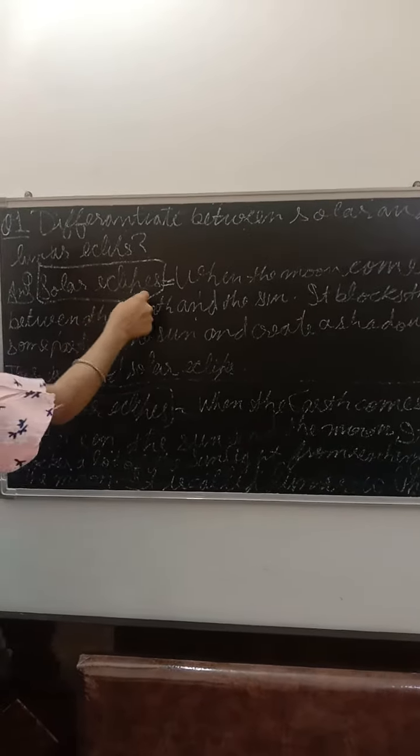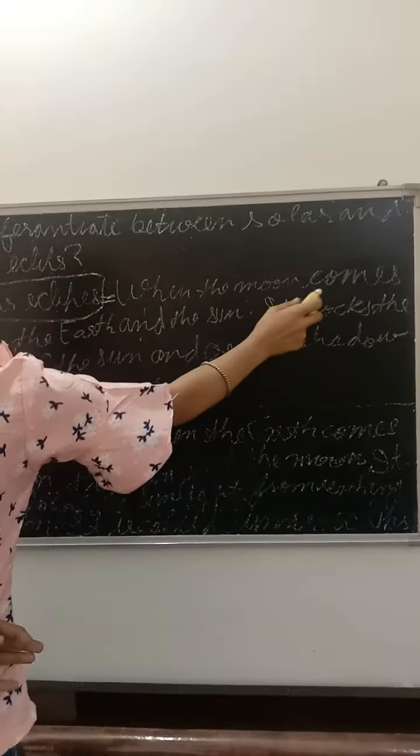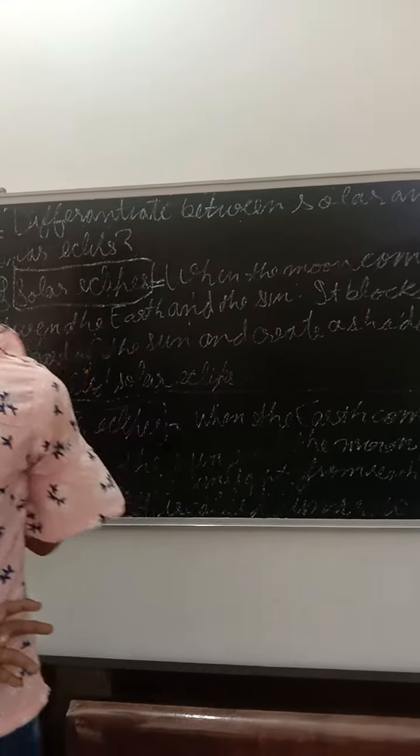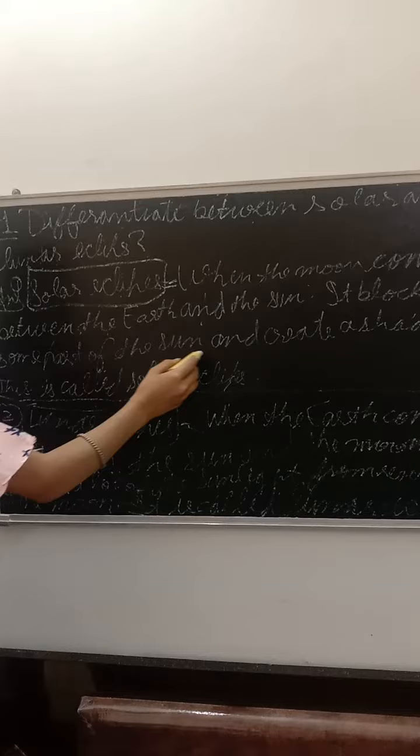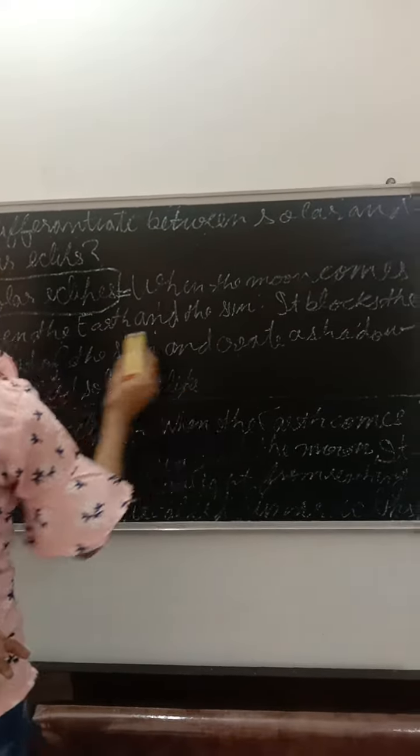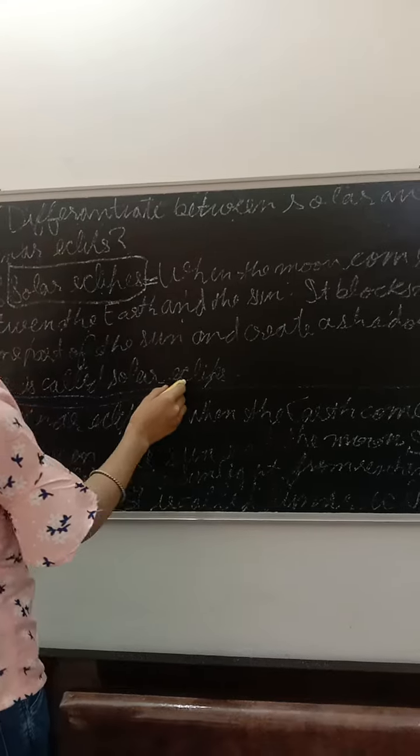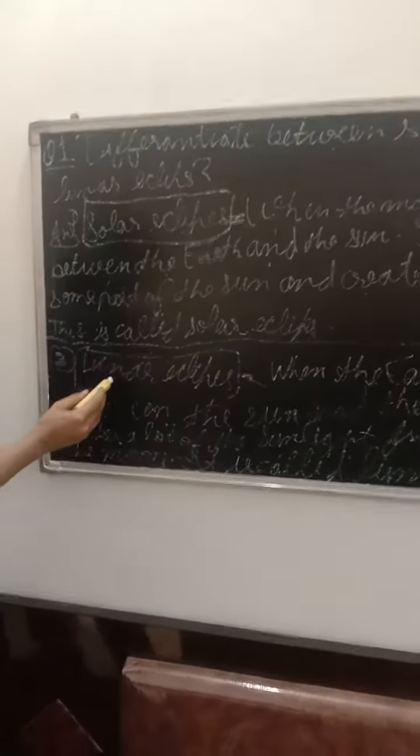Solar eclipse: When the moon comes between the earth and the sun, it blocks part of the sun and creates a shadow. This is called solar eclipse.